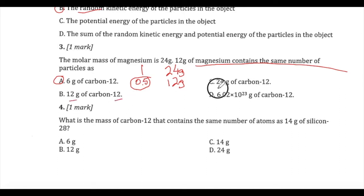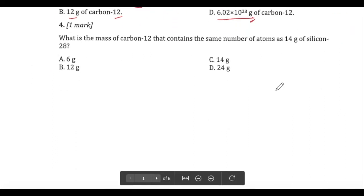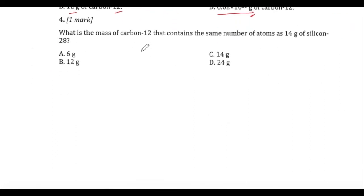12 grams of carbon-12 would be one mole, and 24 grams of carbon-12 would be two moles — those are just distractors. One option lists Avogadro's number but specifies grams, making it a meaningless choice. For question four: what mass of carbon-12 contains the same number of atoms as 14 grams of silicon-28?